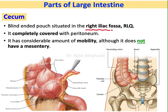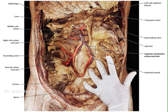The cecum is located in the right iliac fossa. This is the iliac bone and this is the right iliac fossa where the cecum is located. It is completely covered by peritoneum, and although it has peritoneal folds which give it a kind of fixed appearance, it still has a considerable amount of mobility.